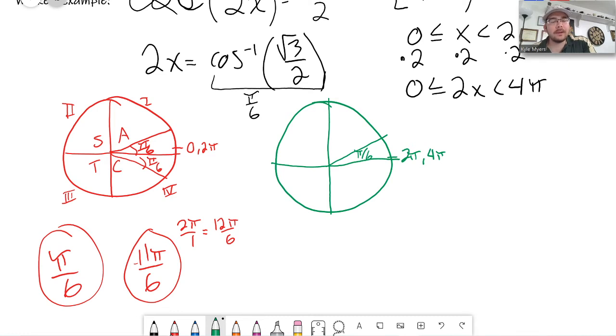So 2π plus π over 6, again 2π is 12π over 6, plus π over 6 is 13π over 6. And again, you could keep this in degrees if you really wanted to, it's 13π over 6.